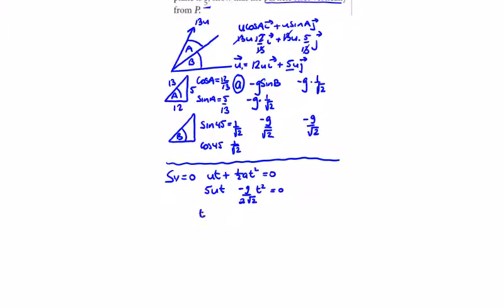So factor out your t to get 5u minus g over 2 root 2 times t. So we get our initial t equals 0 and t which is 10 root 2u over g. So I'm going to need the time of flight when the particle strikes and s of y becomes 0 for my initial and my ending point.